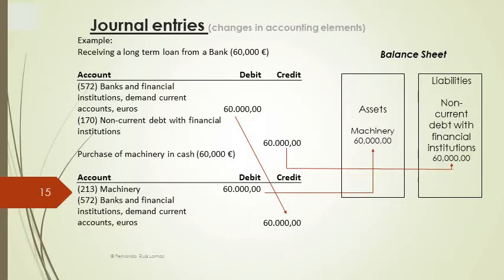By extracting the movements in the different accounts from the journal ledger, which contains these two journal entries, the balance sheet will disclose a sum of €60,000 in assets, corresponding to the balance of the account machinery, since the balance of cash is zero after crediting in the second journal entry the same amount we initially debited in the first. In the right column we disclose €60,000 in liabilities, related to the non-current debt with financial institutions — that is, debt which is not due within more than 12 months.